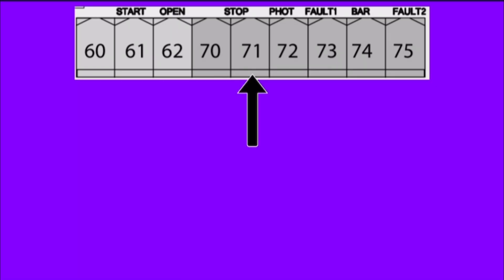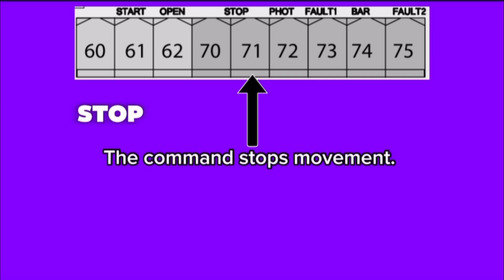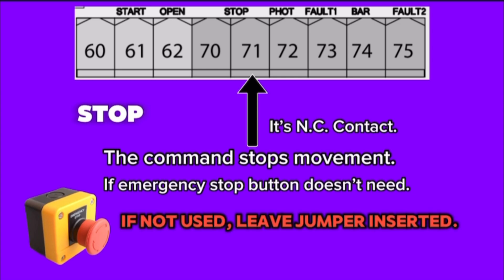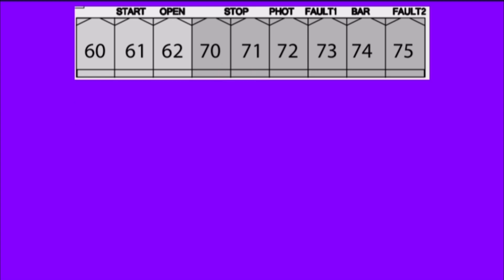Pin 71, stop block. The command stops movement. It's NC contact. If emergency stop button doesn't needed, and not used, leave jumper inserted. Pin 70 and 74 also keep jumper.